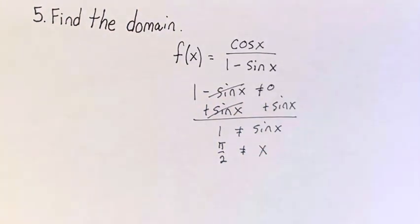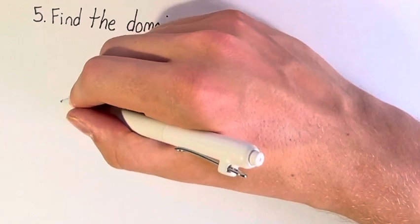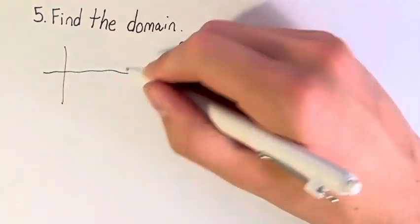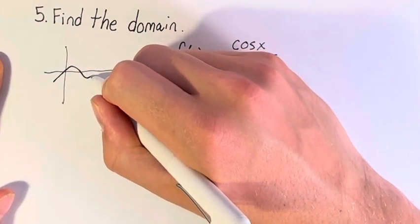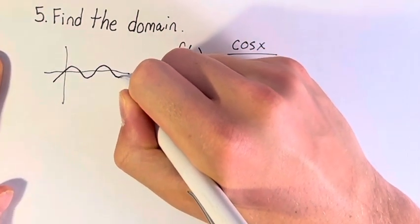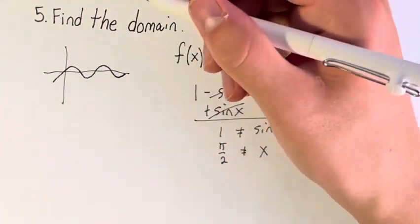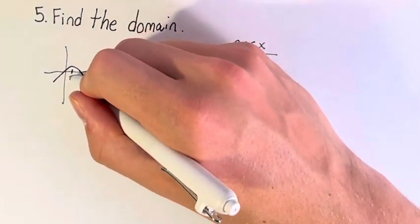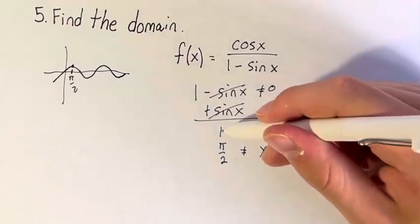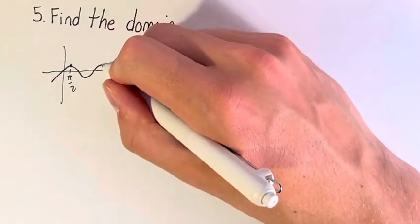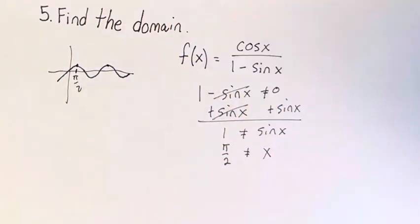However, the sine function itself is periodic. Right? If we look at the general shape of the sine function, we see that it hits the same values more than once. So right here at pi over 2, we have x is equal to 1, or sorry, sine of x is equal to 1. That also happens here, and here, and here, and infinitely many times.